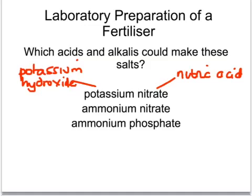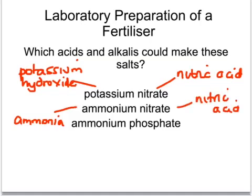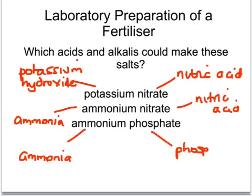In order to make ammonium nitrate, we'd use ammonia and again nitric acid. And in order to make ammonium phosphate, again we'd use ammonia, but this time to make a phosphate we'd use phosphoric acid.